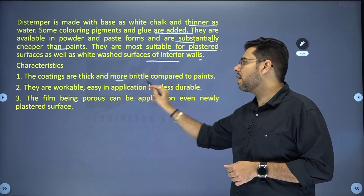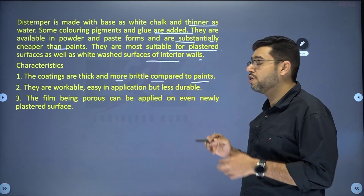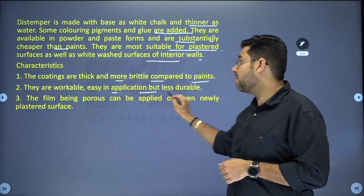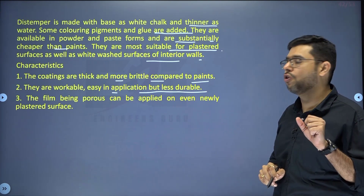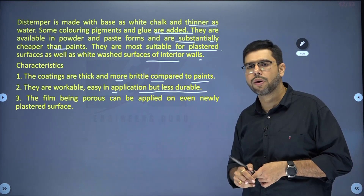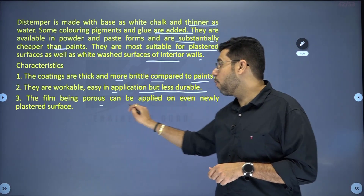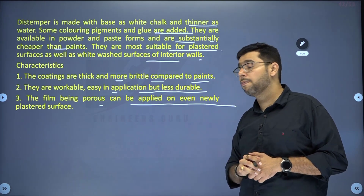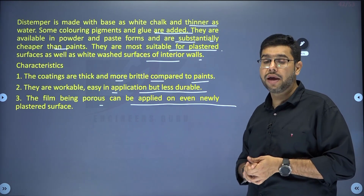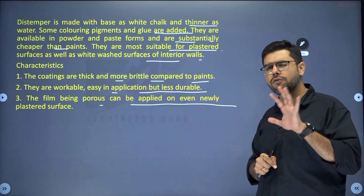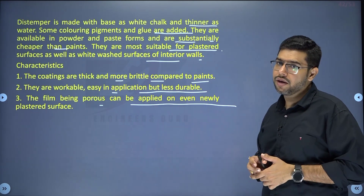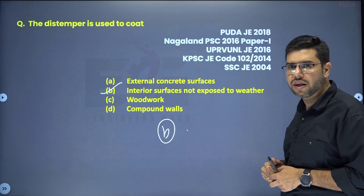Characteristics of distemper: the coatings are thick and more brittle compared to paints, so they peel off quickly — that is why durability is low. They are workable and easy to apply but very less durable, so you have to keep repeating the application over time. The film being porous can be applied even on newly plastered surfaces — since plaster takes time to dry, if the surface is slightly wet, distemper can still be applied easily because water can escape through the porous film.